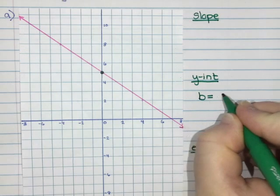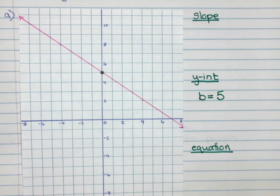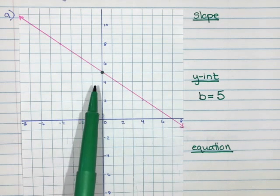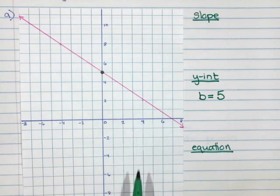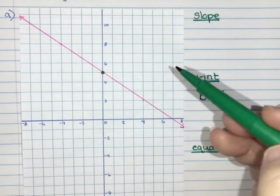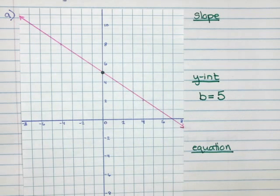Now to do the slope, slope is the roadmap for how you get from one point to another. So you want to see if you can find your way to another point. I'm going to follow my line and see if I can find another point where it crosses at the corner of some grid lines.